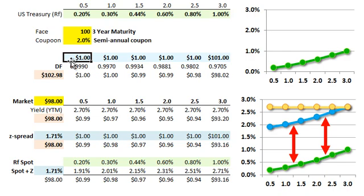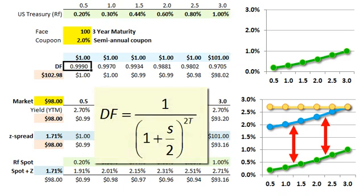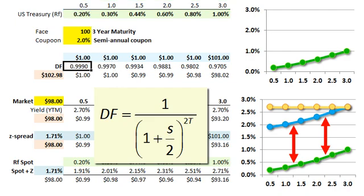So here's the series of future cash flows. It's a 2% semi-annual bond, so that's $2 per year — a $1 coupon at six months, a $1 coupon at one year, and so on, until the end of three years with the final coupon and return of face value. The typical discount factors are one plus the theoretical zero or spot rate divided by two (for semi-annual), raised to the maturity times two. This set of discount factors gives us the discount function.